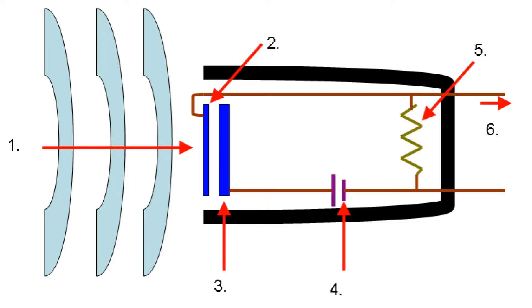Now let's look at how a condenser microphone works. As the sound waves — number one — come into the microphone, they hit and move the diaphragm, number two, the blue part in the front. This diaphragm sits just in front of a fixed back plate, number three. Since the condenser microphone is powered, electrical current passes from the diaphragm to the back plate. When sound waves move the diaphragm closer to the back plate, it changes the voltage, and that's what creates the signal. The lightness of this diaphragm makes it much more sensitive to sound waves, especially because it doesn't have to push a big coil like a dynamic mic.